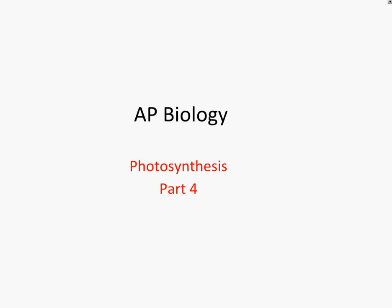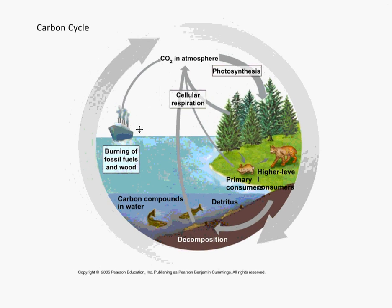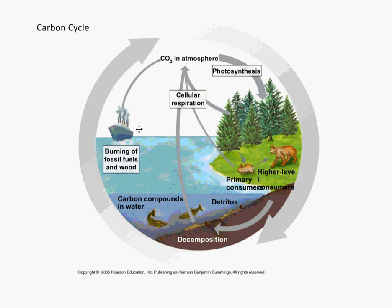This is part four of unit two of photosynthesis. We'll wrap up photosynthesis with a few things that should be largely review, with a couple others that may be new to you. One thing to hit on that we've already talked about is the carbon cycle — just to make sure we understand that all organic carbon in biological systems originates from CO2.